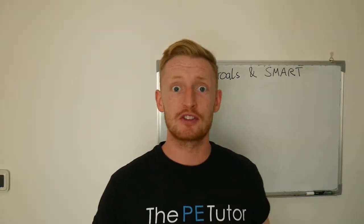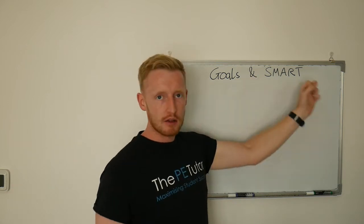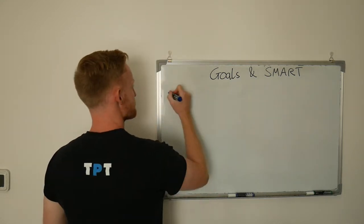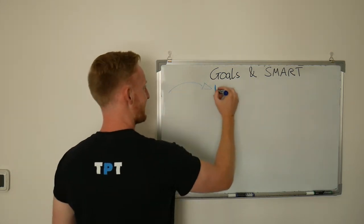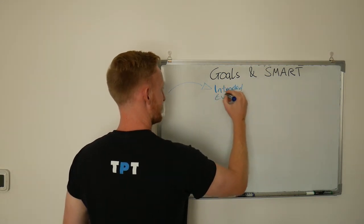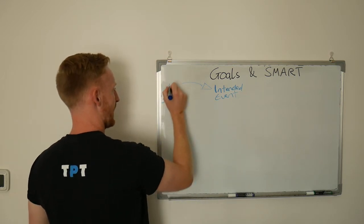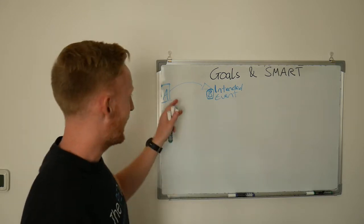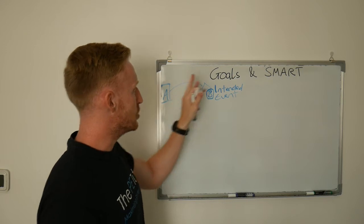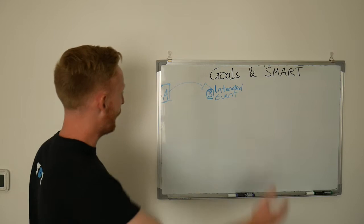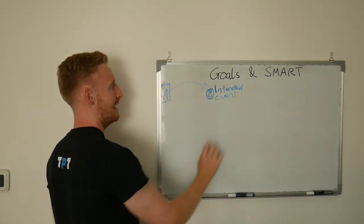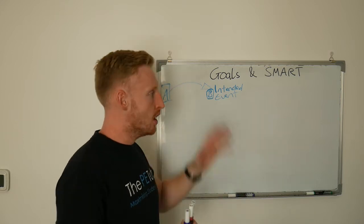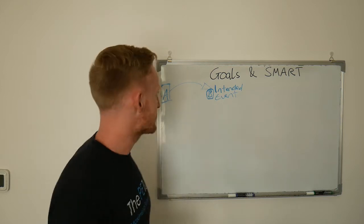Hello and welcome to this mini lesson from inside the PE portal. Today we're going to be looking at goals and smart target setting. We'll start off with goals. First of all, we need to know what a goal is, which is an intended place to be in the future — an intended outcome or intended event. It's where a person is now at point A and they intend to be at point B. That is a goal; it's something they are aiming towards, directing their behavior, intentions, and energy towards realizing this intended event.